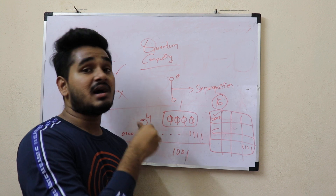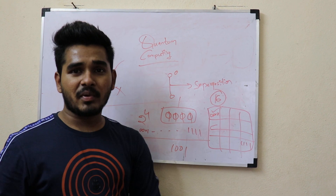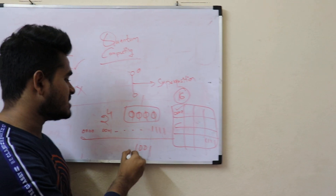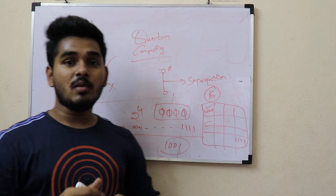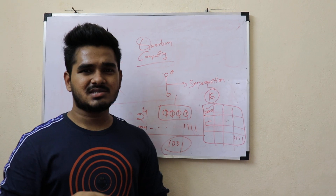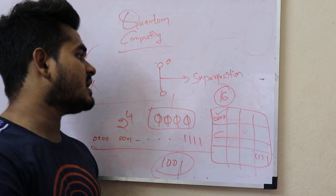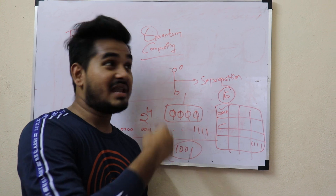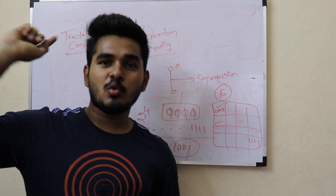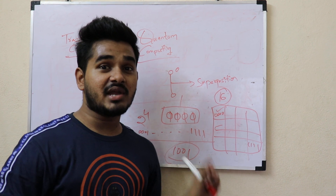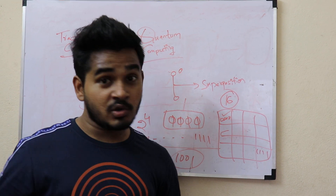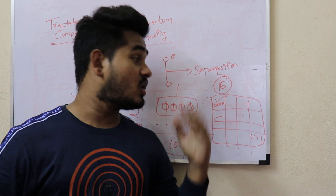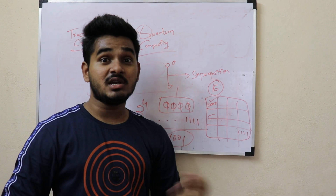In that single attempt, all 16 probabilities are present. There are operators that reduce the wrong answers, so in one attempt it can give you the correct answer — say one zero zero one. The difference: if it is 2 to the power of 4, classical takes 16 attempts and quantum takes one. If it is 2 to the power of 10, classical takes 1024 attempts and quantum still takes only one. Even at 2 to the power of 20, quantum takes just one attempt.